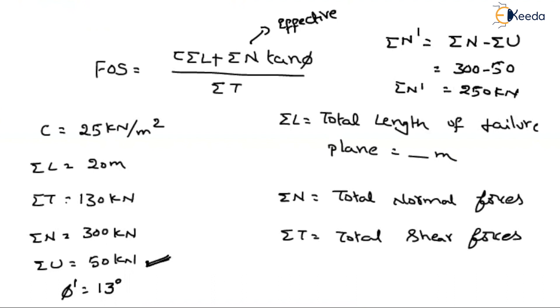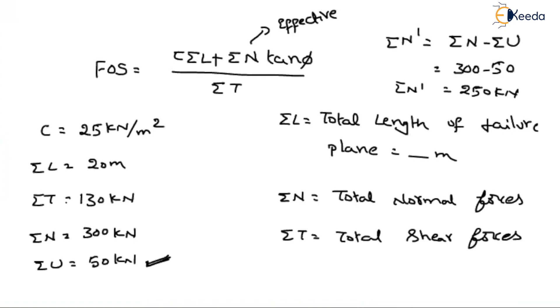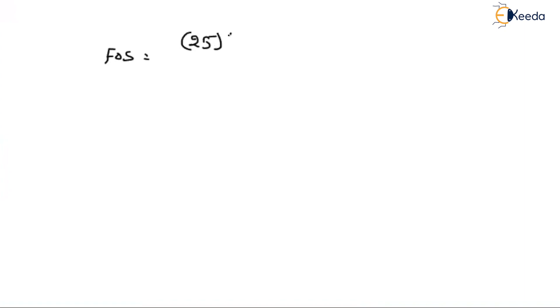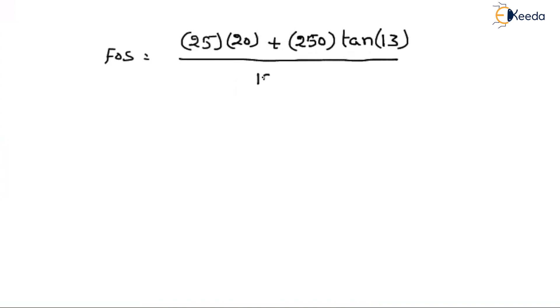This is the effective value. Now substituting those values into the equation. Factor of safety equals: C times L plus N-effective times tan(φ′), divided by summation of T. That is: 25 into 20, plus 250 into tan(13 degrees), divided by 130. Using a calculator, you will get a factor of safety of around 4.14.